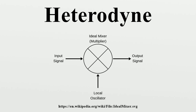In the most common application, two signals at frequencies F1 and F2 mix, creating two new signals: one at the sum F1 plus F2 of the two frequencies, and the other at the difference F1 minus F2. These new frequencies are called heterodynes. Typically only one of the new frequencies is desired, and the other signal is filtered out of the output of the mixer.